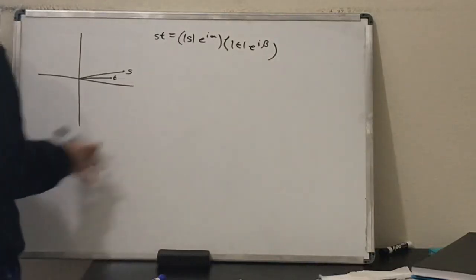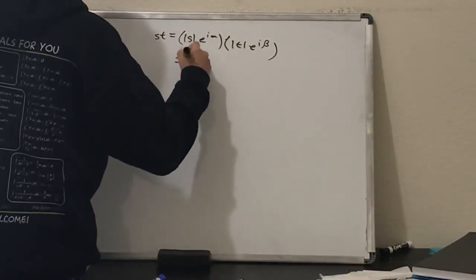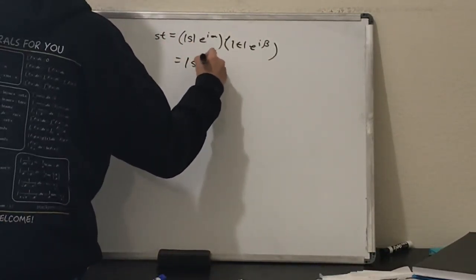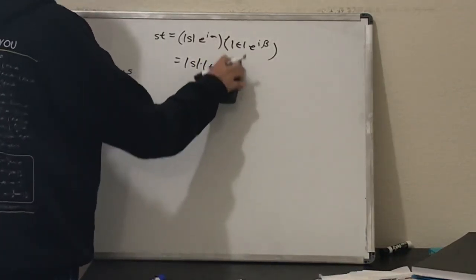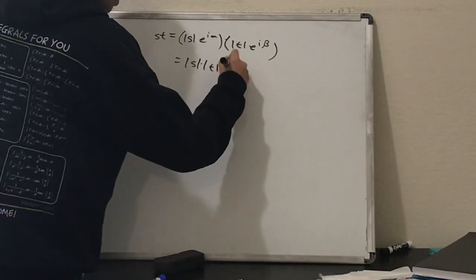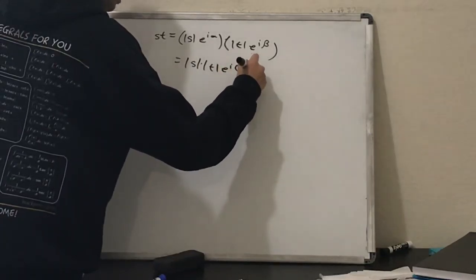Okay, so here's the deal. We'll multiply, rearrange, we get magnitude of s times magnitude of t, and then times e to the i alpha plus beta.